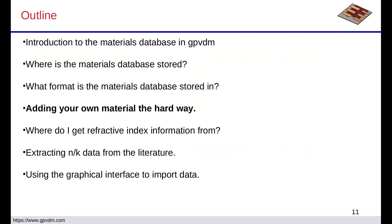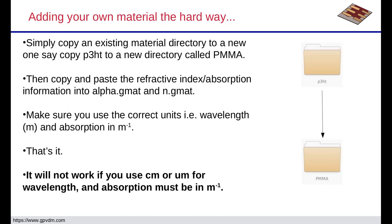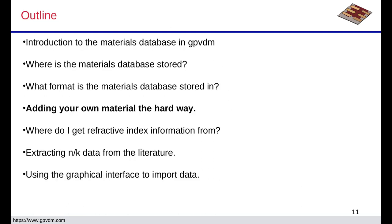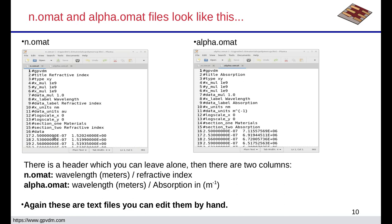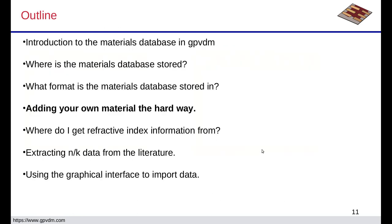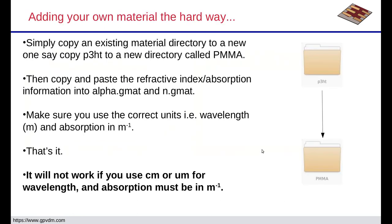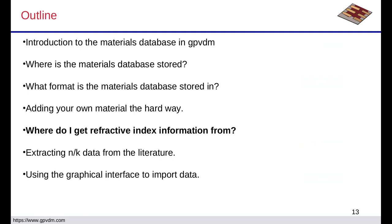First I'm going to go through adding your own data the hard way, then we'll do it the easy way. For the hard way: if you want to make a new material, just copy an existing directory — say you have a folder called 'p3ht', copy it and call it something else like 'pmma'. Then find some absorption data — wavelength versus N, wavelength versus alpha — and copy and paste that into the n.gmat and alpha.gmat files, making sure the units are correct. That's it — you just need to literally copy in the data.